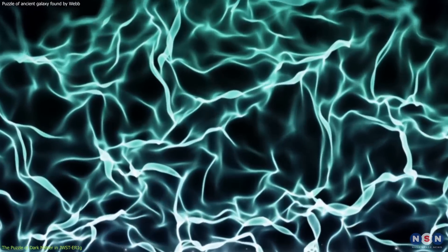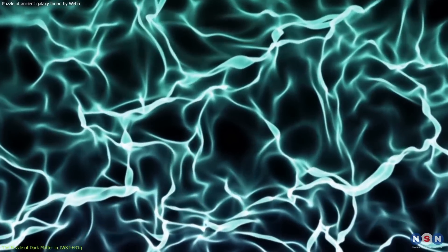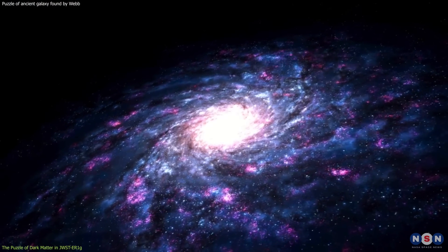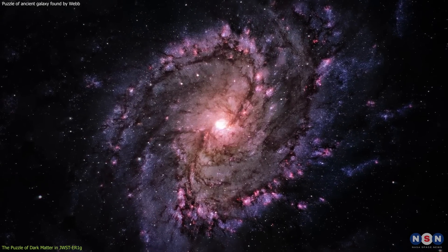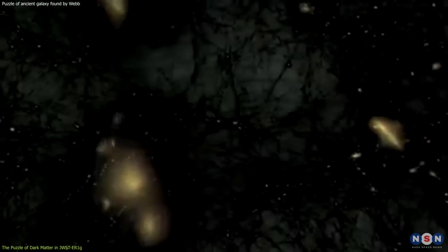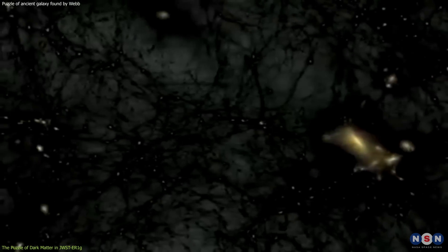The case of this galaxy is particularly fascinating because the mass measurements derived from the gravitational lensing effects suggest a higher concentration of dark matter than what would be typically expected. The calculations based on the lensing data reveal that the total mass of the galaxy, including both its stellar and dark matter components, is significantly dense. This unusually high density of dark matter within the galaxy's confines poses a puzzle.